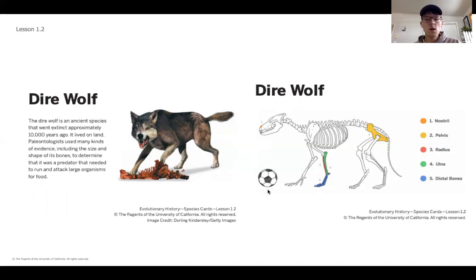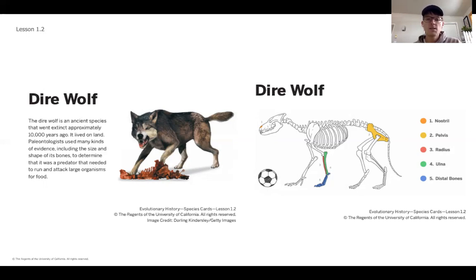As you go through, you're going to notice that there are sometimes a soccer ball or an apple shown — those are there to give you a sense of how big each animal was. That might be another way that you could categorize the animals, in terms of size.